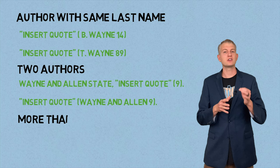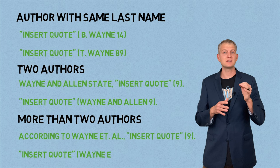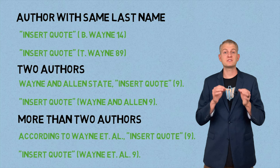Here's what you do if there are more than two authors. First option: cite the last name of the first author listed followed by et al., the quote, and then the page number. Or, in the parentheses, put the last name followed by et al. and the page number.